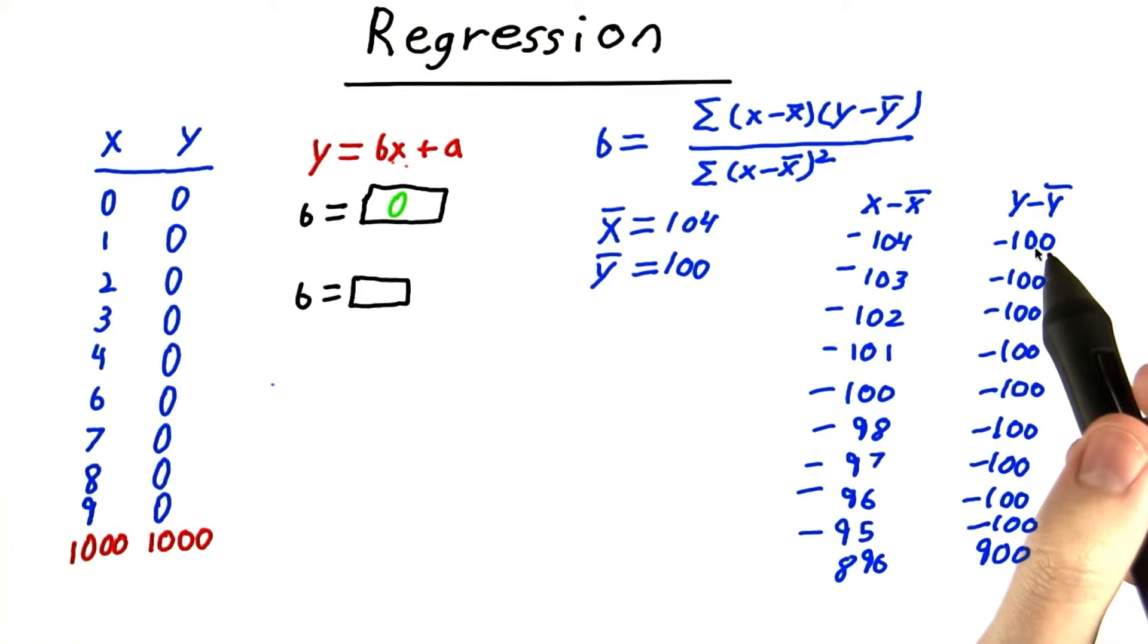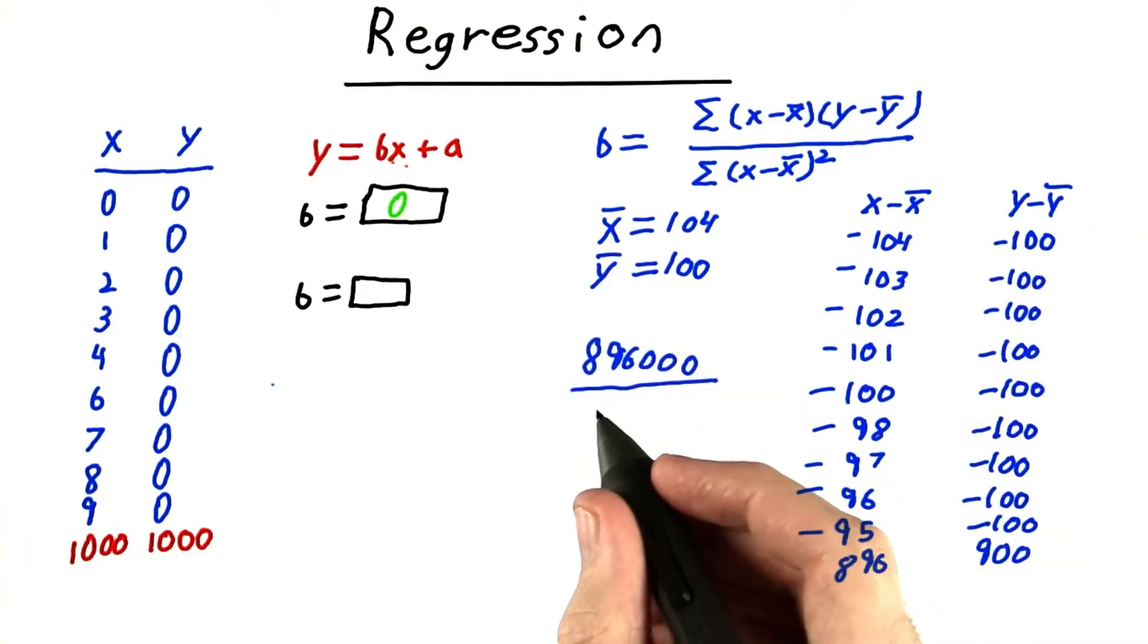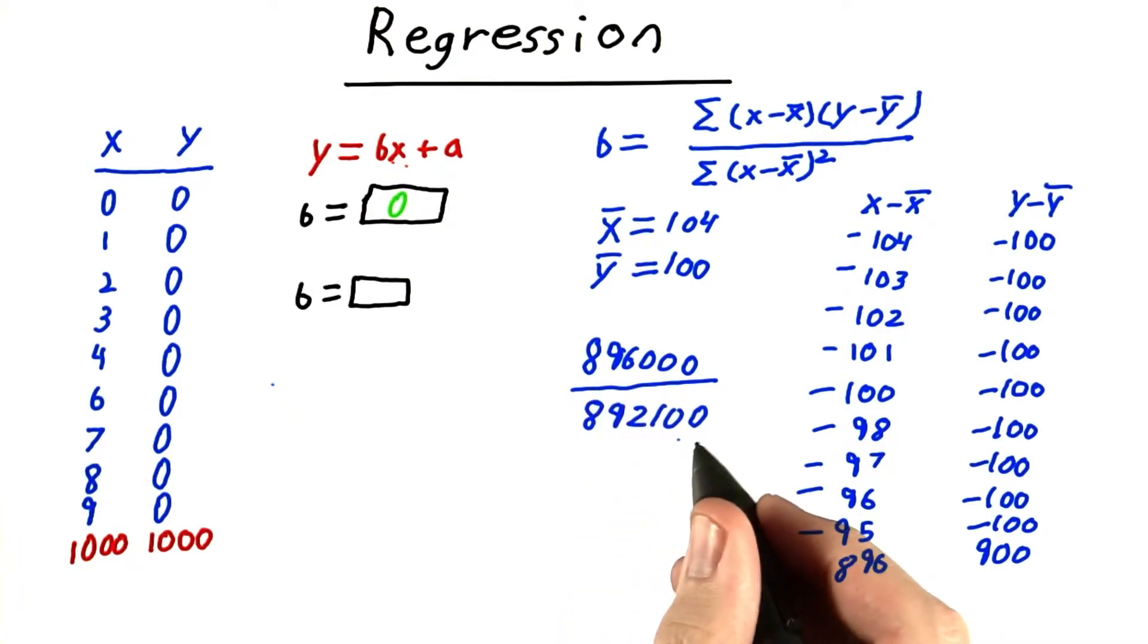And if we add up the product of these, we get a fairly large number, 896,000. And the denominator is equal to 892,100.